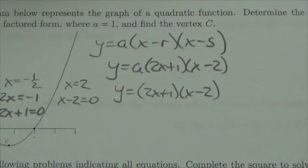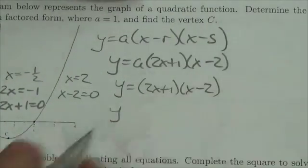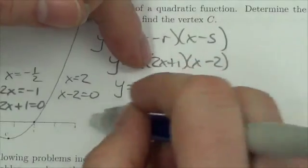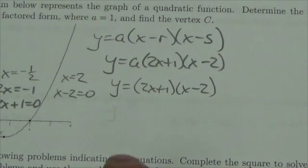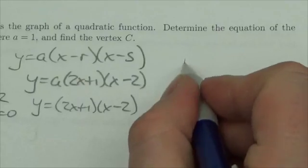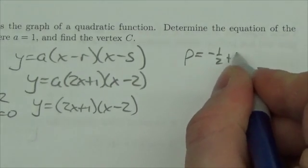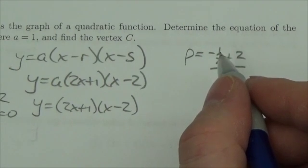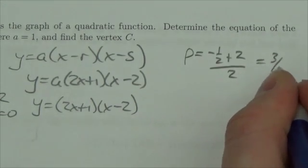Now we're supposed to write this in vertex form — actually, the question just wants us to find the vertex. So let's be clever about this. I know my two x-intercepts are negative 0.5 and 2. The p-value of the vertex is the average of those two numbers. So I'm going to take negative one half plus 2, divide that by 2. Negative 0.5 plus 2, divide by 2, and what I get is three quarters.